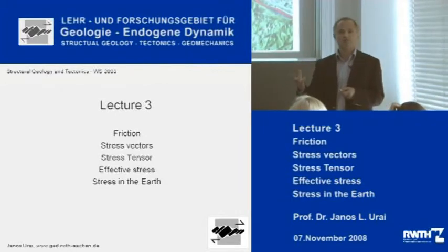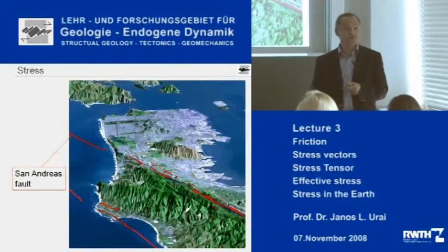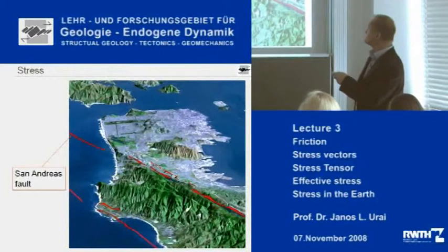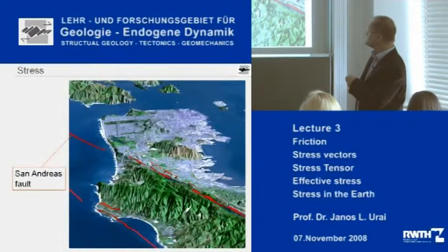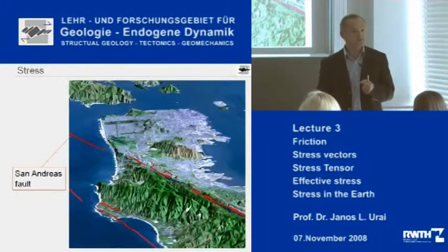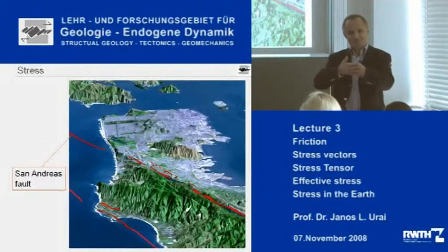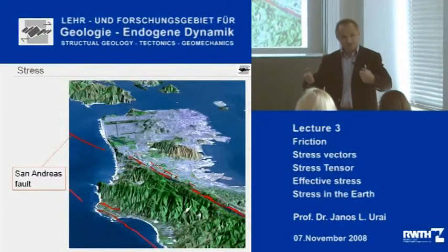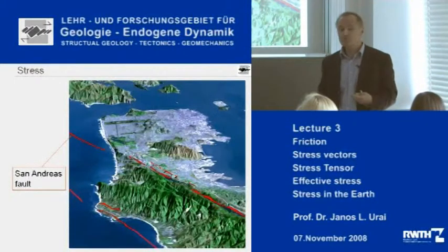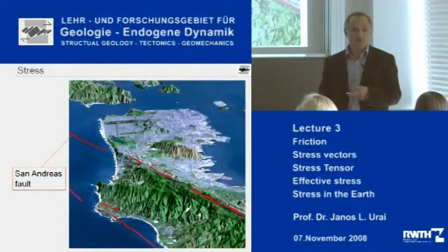I downloaded this picture for you from the website of the United States Geological Survey. This is California — you see the city of San Francisco, Golden Gate Bridge, Alcatraz, the coastal mountains, Half Moon Bay. The red lines here are traces of the San Andreas Fault. The San Andreas Fault is not moving constantly, but the earth below it is moving. The plates are moving, and the San Andreas Fault locks up, increasing the stress stored in the rocks. Then at one point it breaks, and you can get very large earthquakes, predicted to destroy San Francisco within the next 50 years. So, stress is important.